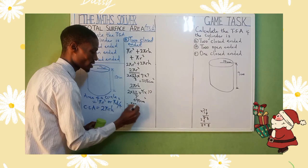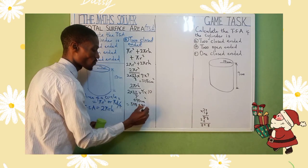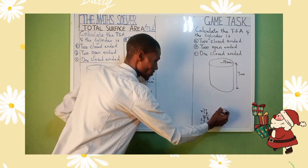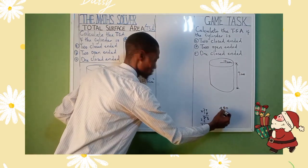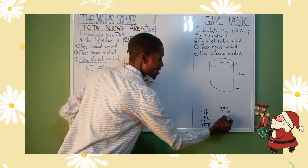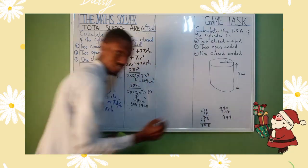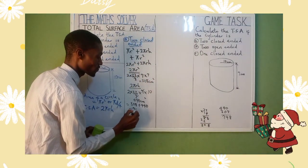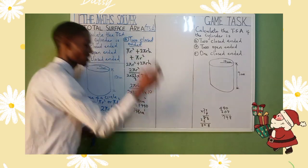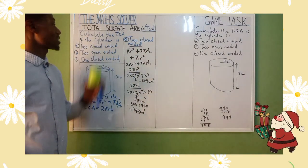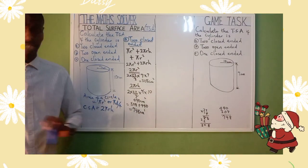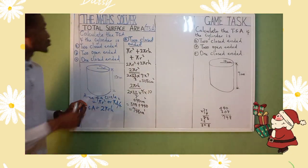Now let's add everything together: 308 + 440 = 748 cm². That's all for two closed-ended.